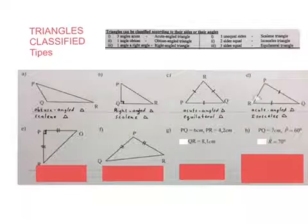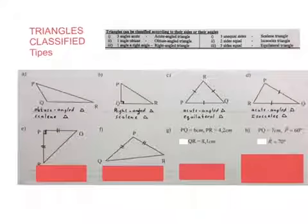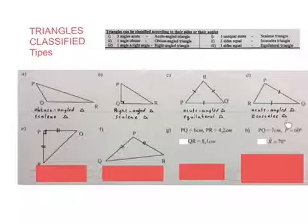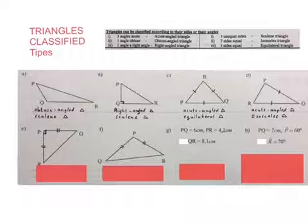This is an acute angled triangle because all three of the angles are acute, and more importantly it's called an isosceles triangle because of the two sides that are equal.